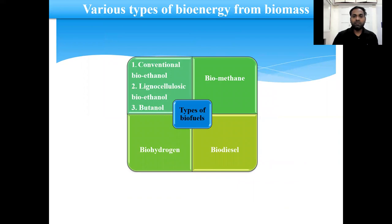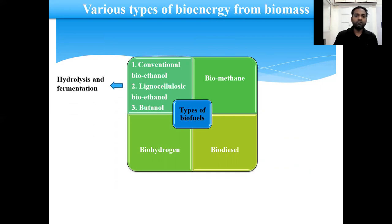So these are the various types of bioenergy from biomass, which mainly consists of ethanol, which is produced from simple sugars like molasses, then lignocellulosic bioethanol which is produced from lignocellulosic biomass, and butanol which is also produced from different types of complex biomass such as lignocellulosic biomass as well as from simple sugars. This can be produced by using the hydrolysis and biofermentation process.